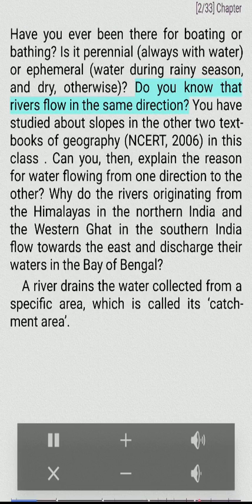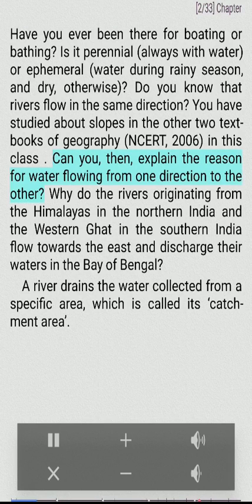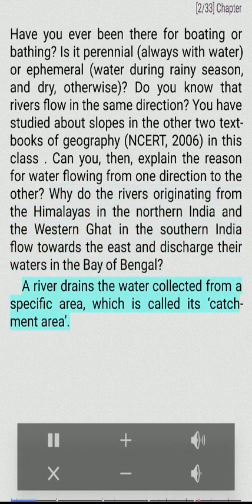Do you know that rivers flow in the same direction? You have studied about slopes in the NCERT geography textbooks. Can you explain the reason for water flowing from one direction to the other? Why do the rivers originating from the Himalayas in northern India and the Western Ghats in southern India flow towards the east and discharge their waters in the Bay of Bengal?